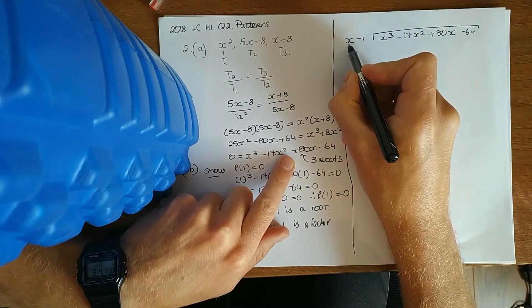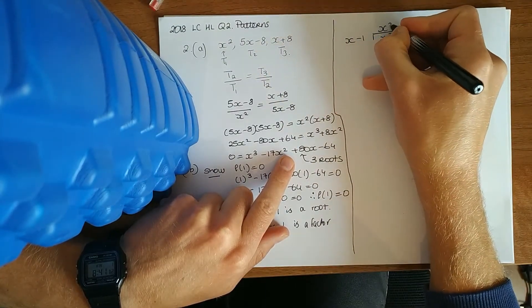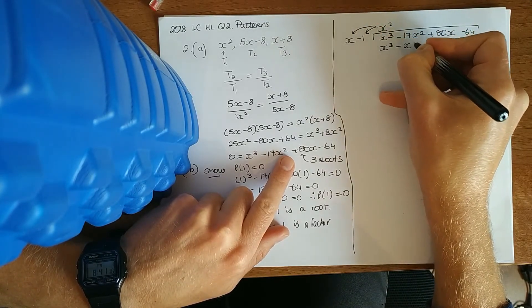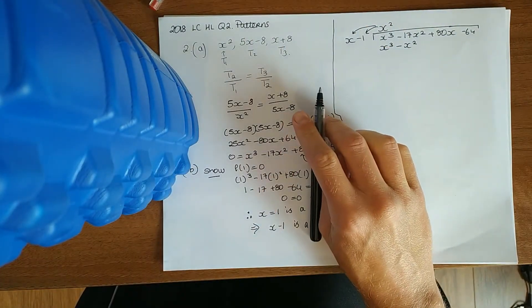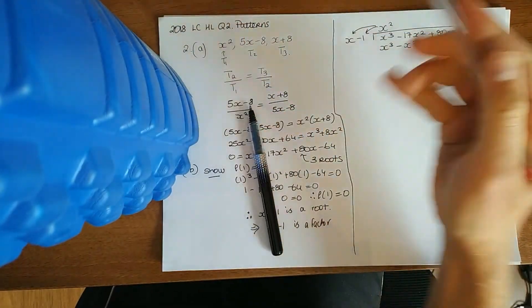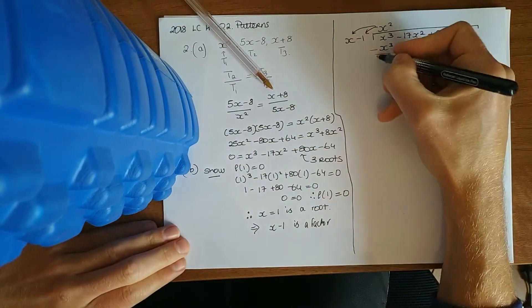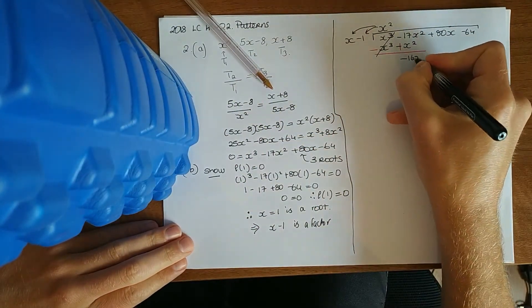And then divide it in. So what do you multiply x by to get x cubed? x squared. Multiply it down, get x cubed minus x squared, and then draw your line, change the signs. This is what you do in normal long division: draw your line, change the signs. So there you go, minus 16x squared.